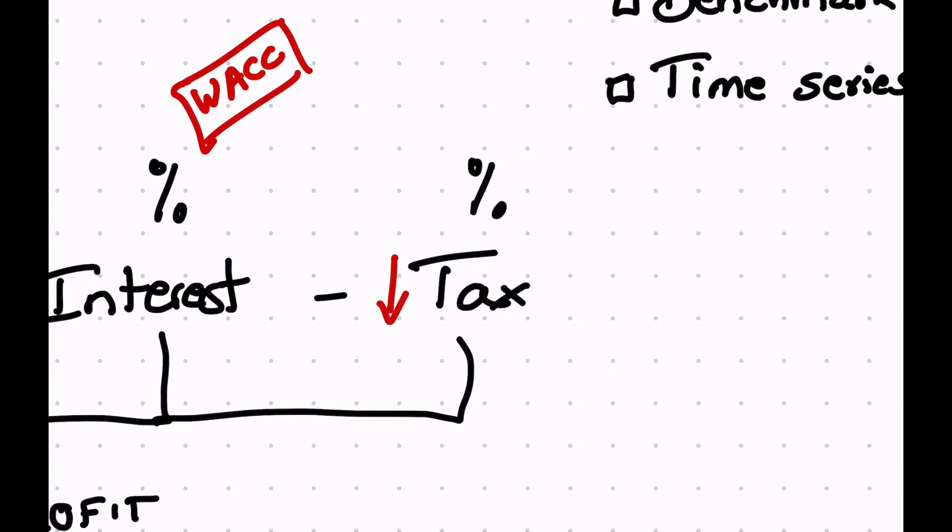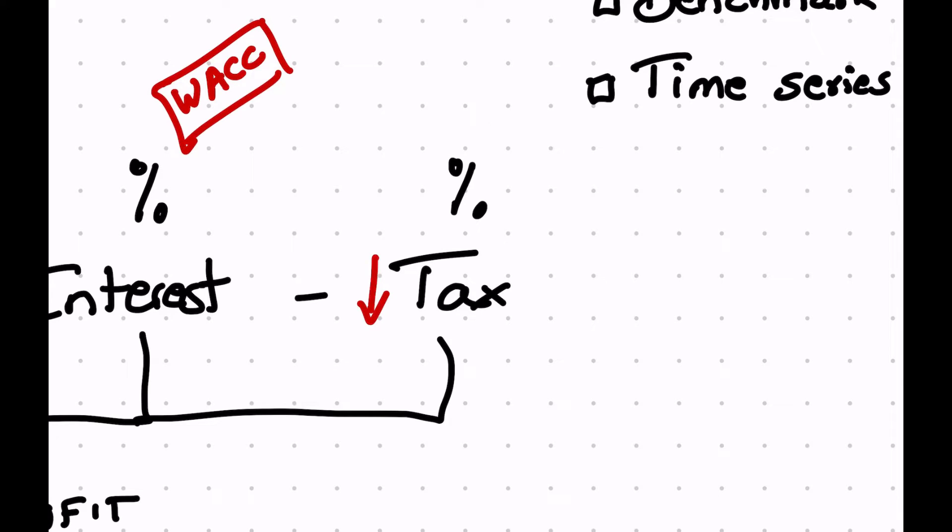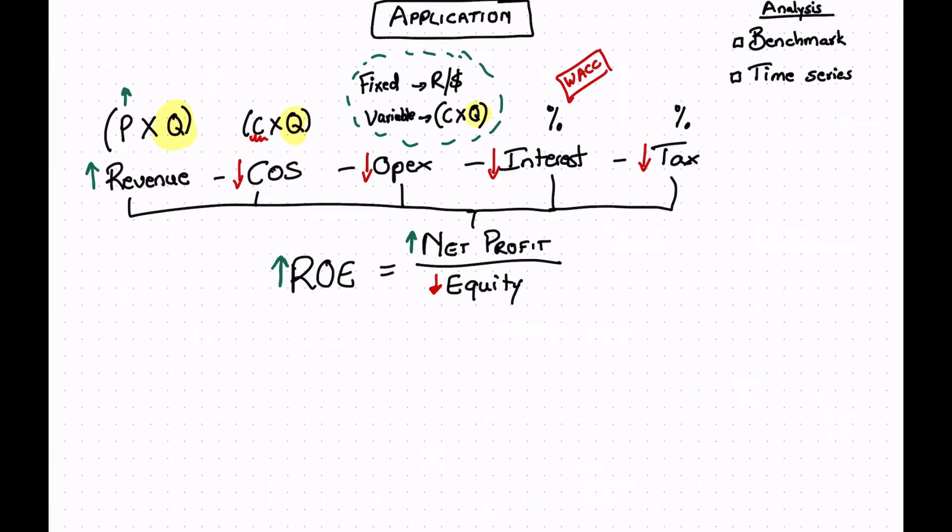And when it comes to taxation, you will find some companies finding those tax havens all around the world. And this is mainly a function of where are you based and you can hire clever people within your organization to then figure out how to minimize your tax burden. Tax avoidance is legal, but tax evasion is illegal. You have to pay tax, but there are ways of minimizing the tax liability.